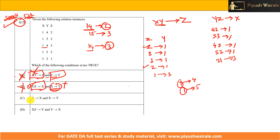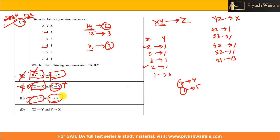Option C states Y→X and X→Y. Y→X: Y=4 gives X=1, Y=5 gives X=1, consistently — so Y→X holds. But X→Y we already verified does not hold (X=1 gives both Y=4 and Y=5). Since option C requires both, and X→Y fails, option C is not correct.